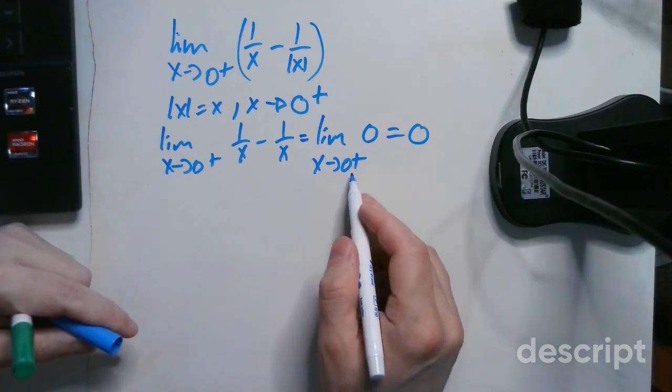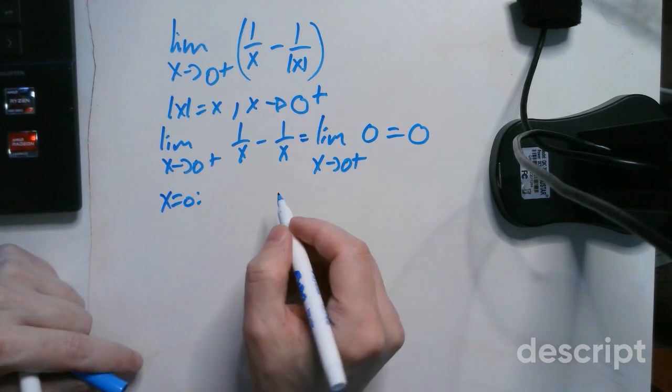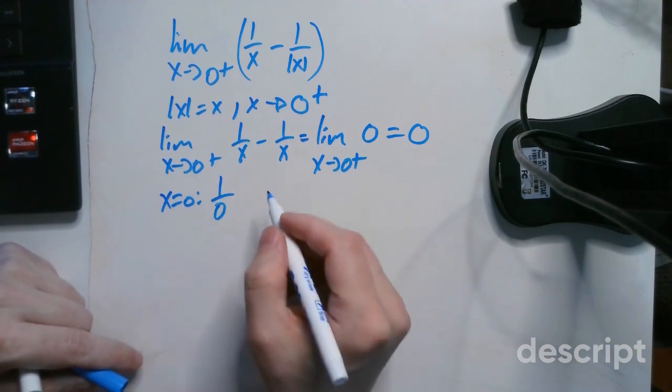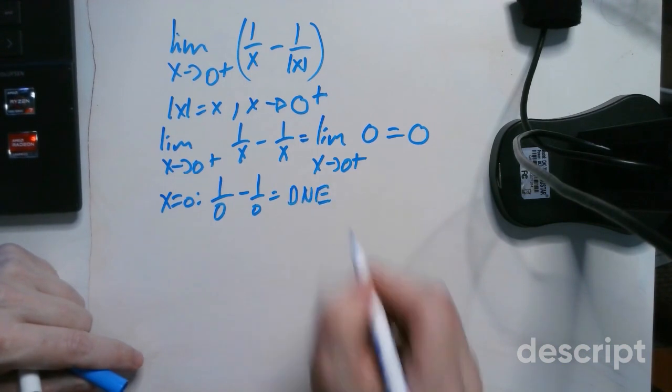Remember that we are approaching 0. We are not saying x equals 0. At x equals 0 itself you have a more bizarre situation because you have 1 over 0 minus 1 over 0, which is indeterminate.